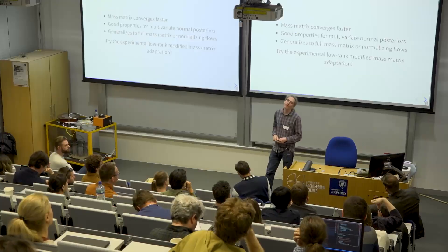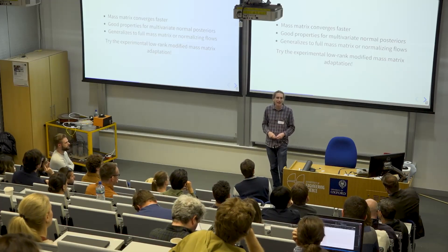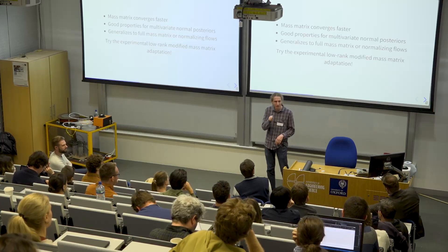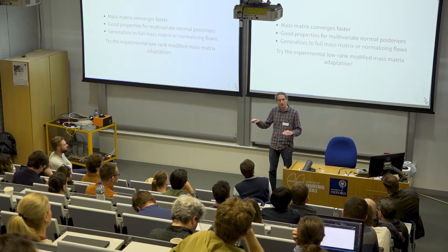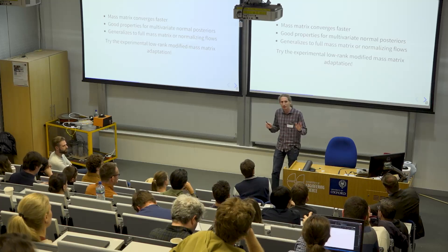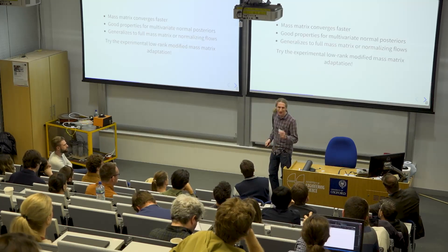NutPy also has an experimental low-rank modified mass matrix adaptation which I'm really curious if people want to try. It's definitely more experimental than NutPy in general, but it should be able to automatically remove some correlations in a posterior for moderately-sized models. It breaks down at some point for very large models but has much lower cost than full mass matrix adaptation. [Audience: Is that like low rank plus diagonal?] No. [Audience: It really is low rank?] It's not quite low rank — it keeps some eigenvalues constant and fixes others, so there is a low-rank matrix in there.